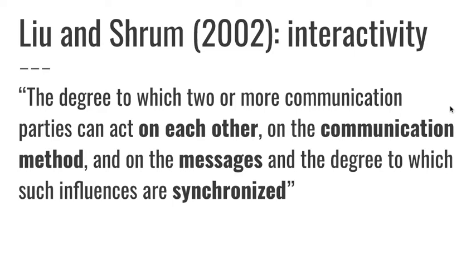By synchronisation, what we mean is whether people have to be in the same time or place or not. For example, a telephone conversation is interactive in that you can act on each other — you can listen to the other person and react — but you both have to be there at the same time, so it has to be synchronised. Email, by contrast, is asynchronous: you might send a message at one time and someone else reads it at another time. That's a different dimension of interactivity.